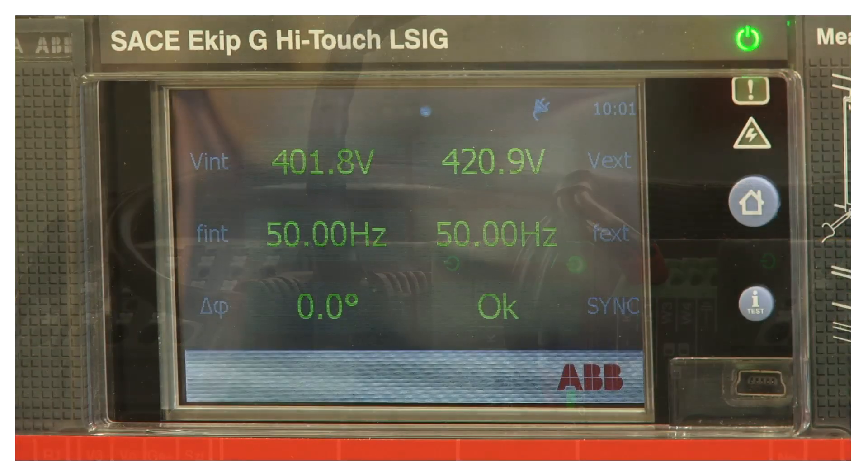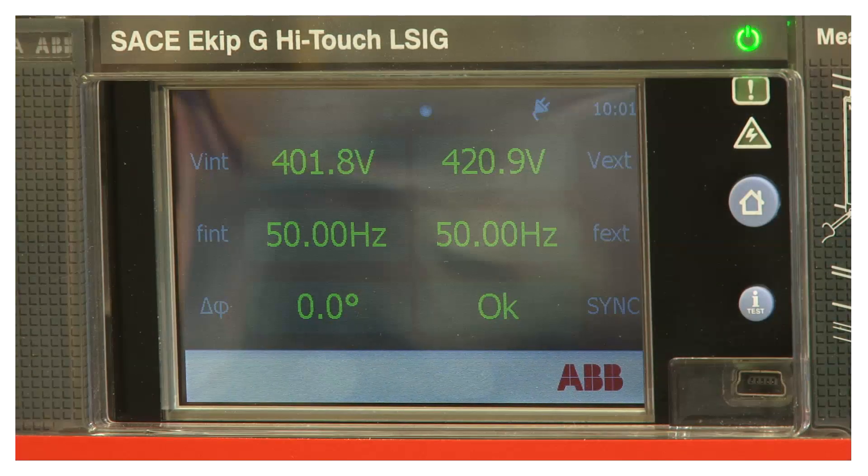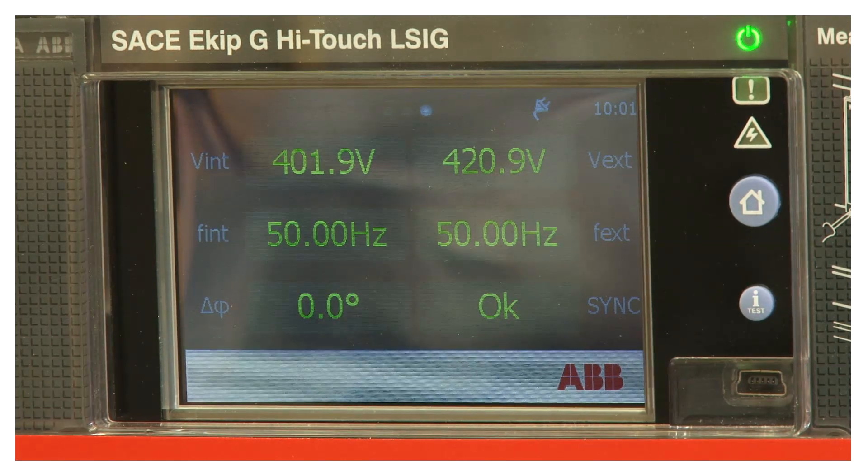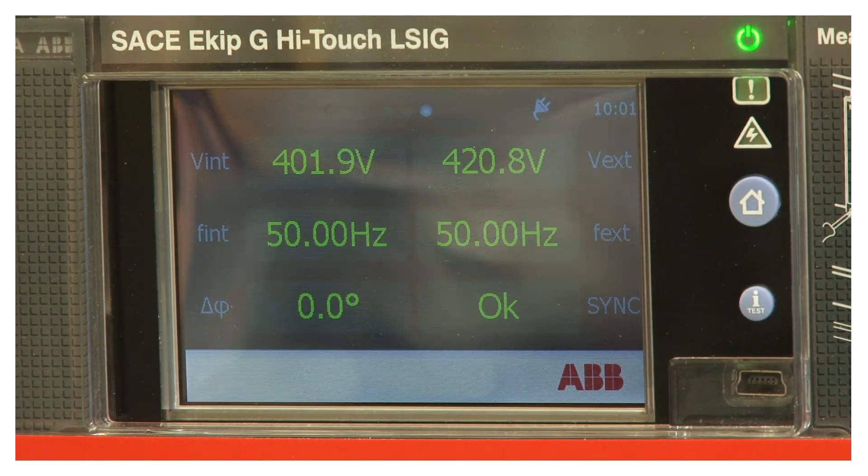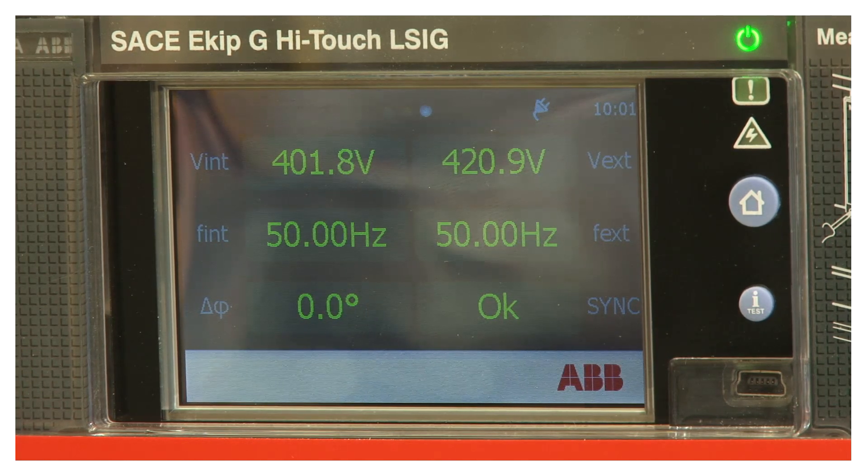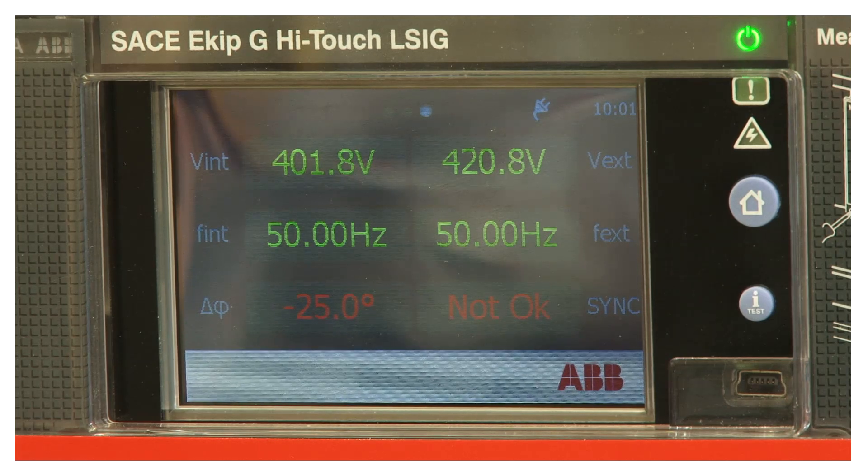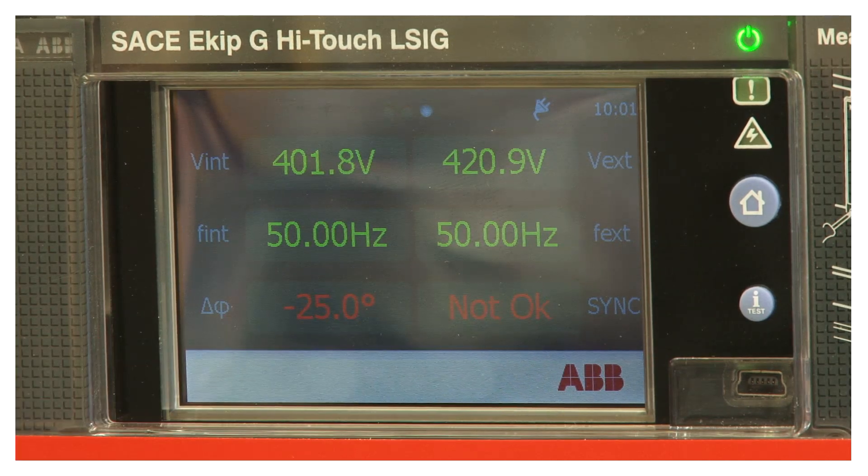A Keep Touch Trip Unit shows in the display all the conditions to be verified if there is a synchronization. The first is voltages, the second is a frequency and finally the degree between the two lines. As soon as all the three conditions are verified, you can see the green light to ok to make the synchronization.